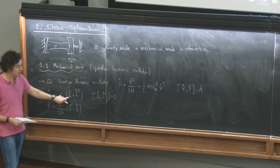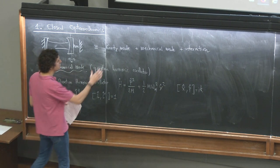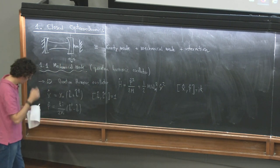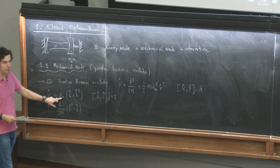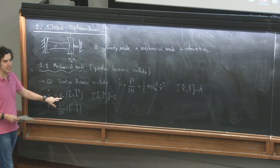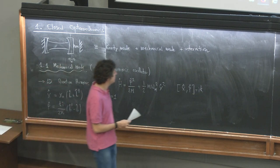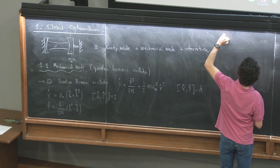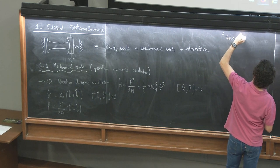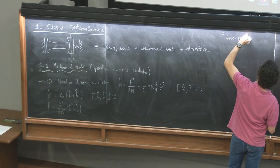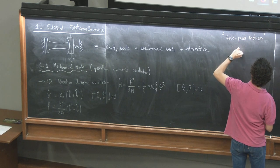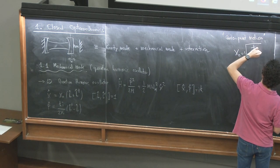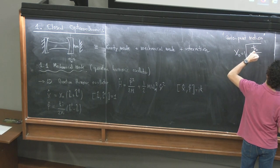This is a change of variables where the creation and annihilation operators fulfill the commutation rule [b, b†] = 1. I call them b for the mechanical motion because I will use a for the cavity degree of freedom. Here it has appeared a value that is very important — a length scale. We call it in optomechanics the zero-point motion: x₀ = √(ℏ / 2mω_m). This is the typical length scale that appears in the quantum harmonic oscillator.